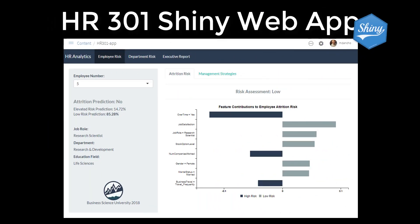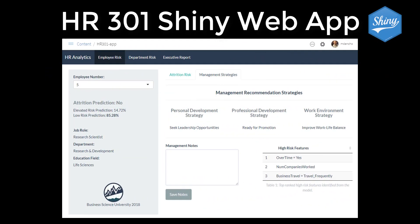This recommendation algorithm is subsequently used in HR 301 to build a machine learning powered shiny web application automation that can be deployed to executives and managers. Alright, let's get started!